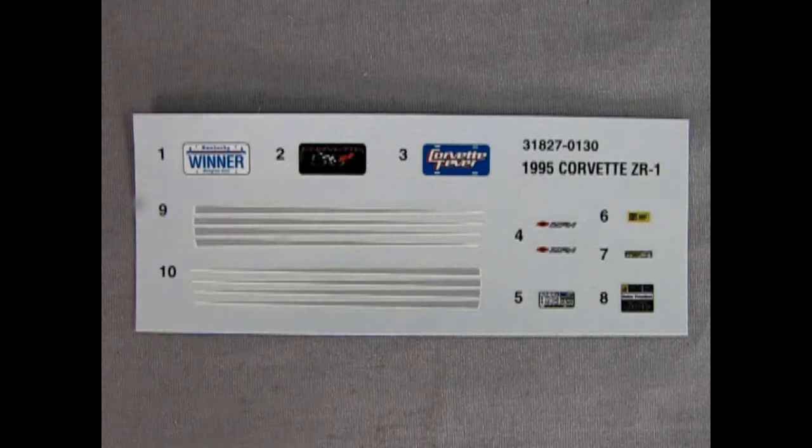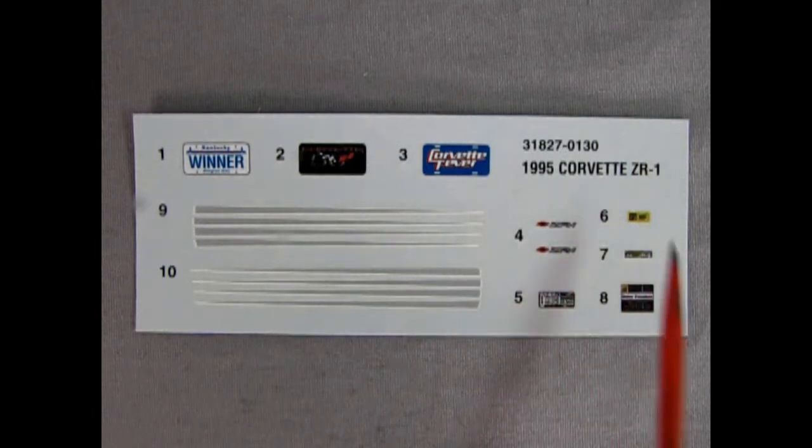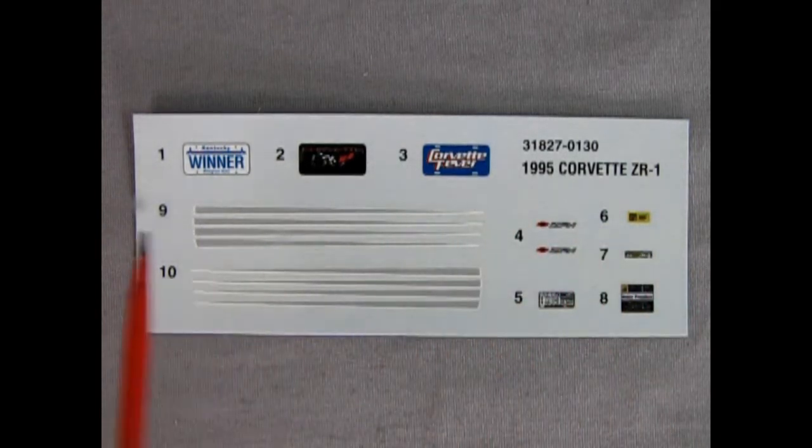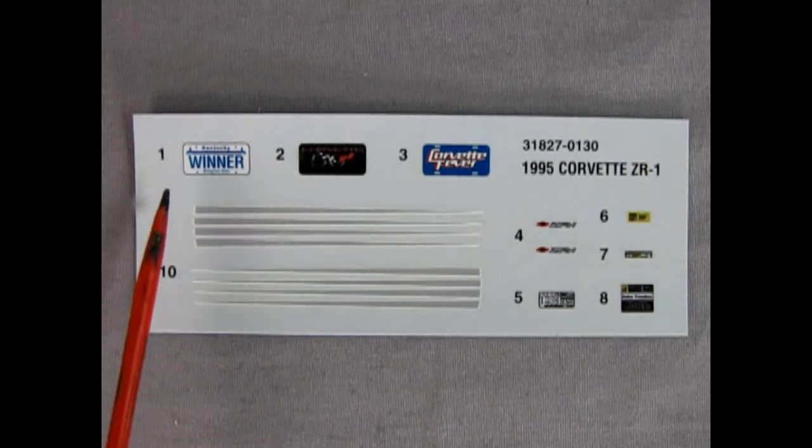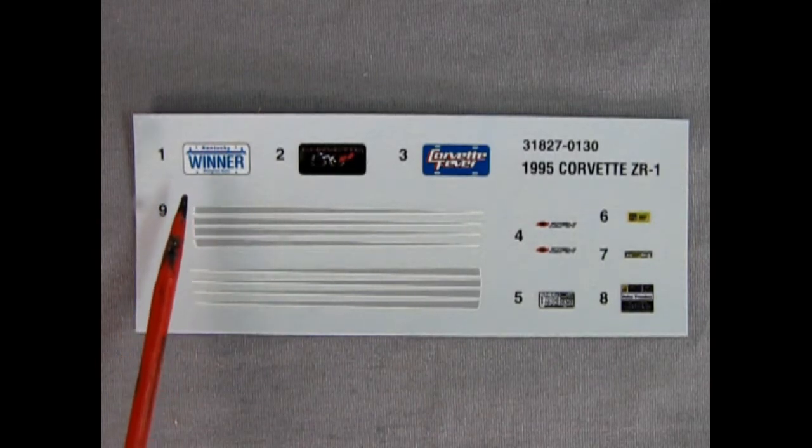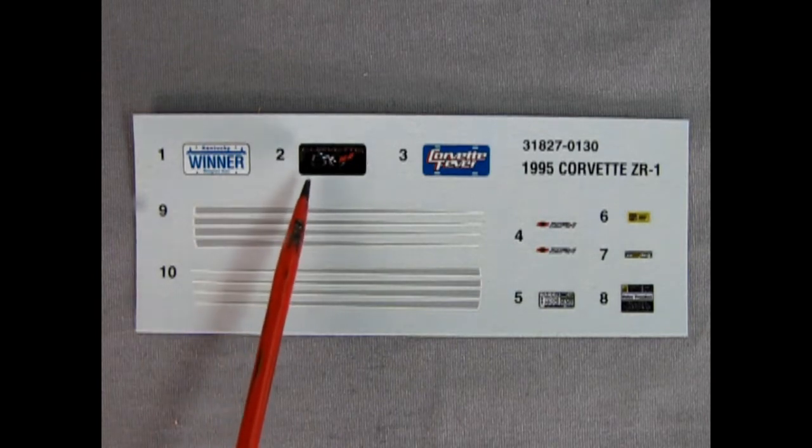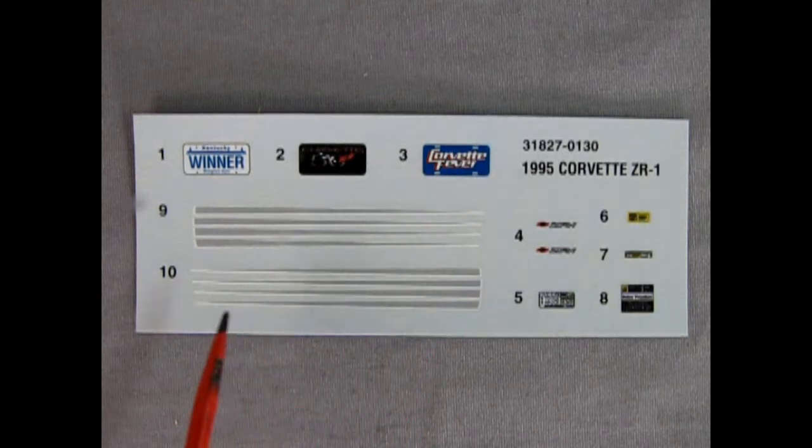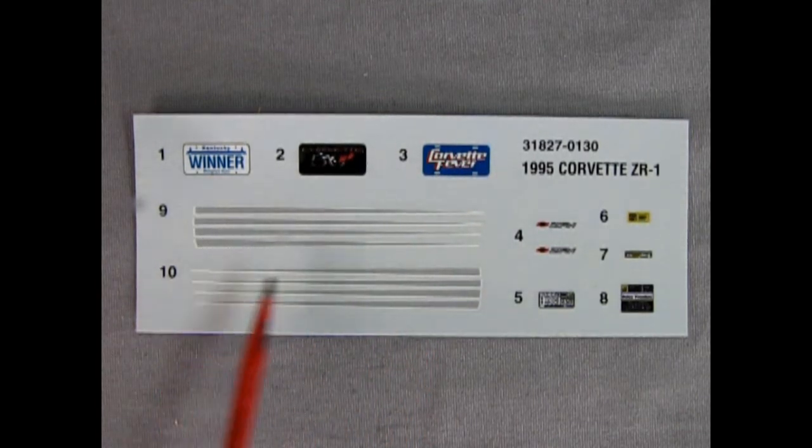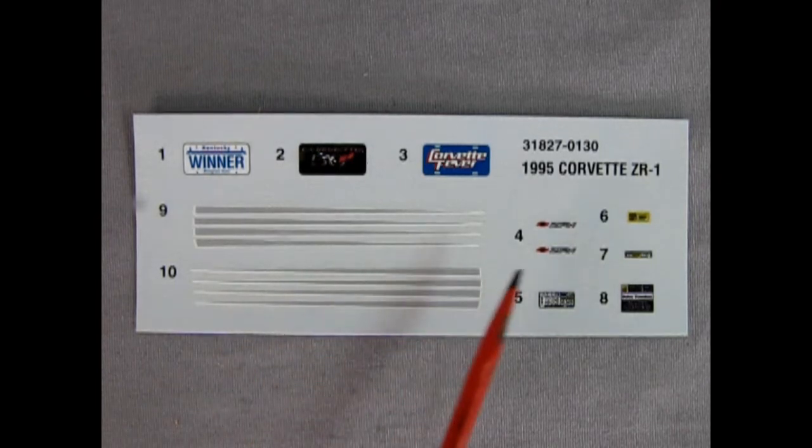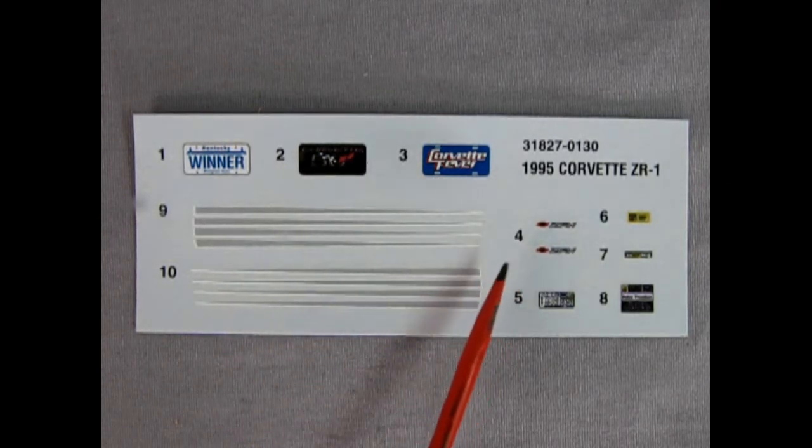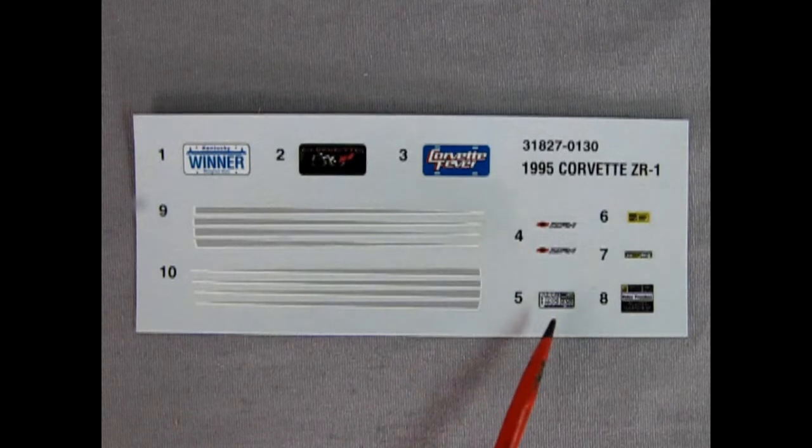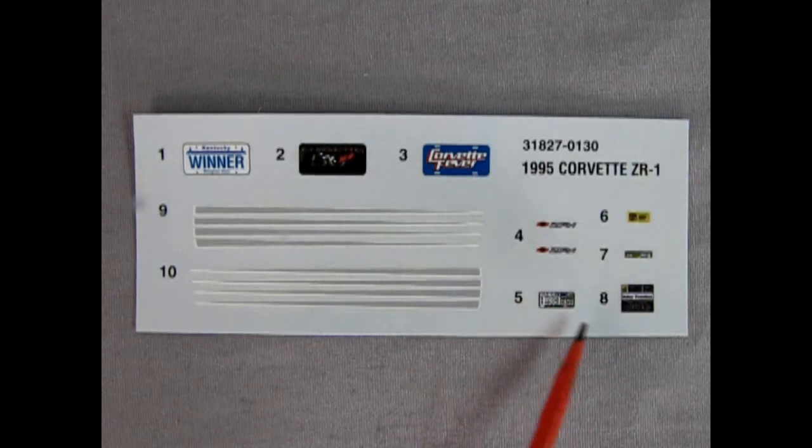And here we've got our decal sheet for the 1995 Corvette ZR1. And this time around we do have some pretty nice license plates. We have a Kentucky Winner which makes me think of the Kentucky Derby, and then we've also got our 50th anniversary license plate for Corvette and a Corvette Fever magazine license plate right there. Check out these white and silver stripes - those look really really nice. There's the ZR1 decals for the side of our car as well as all the under hood pinnings and little decals just to help us in that engine bay.